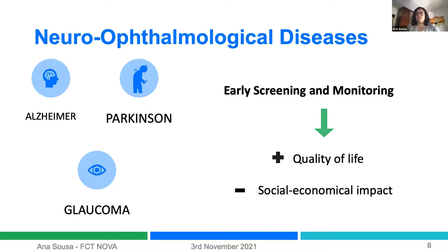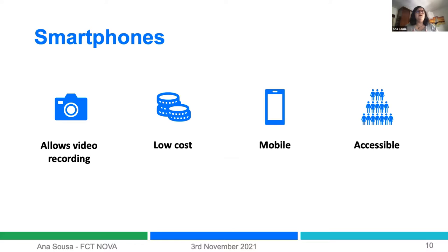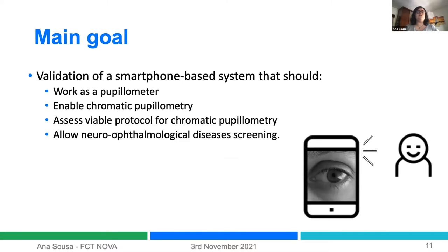If we could early screen and monitor diseases like these, we can increase quality of life and decrease their socioeconomic impact. However, existing pupillometers typically use infrared cameras — they are expensive and not portable, and the more portable ones are also very expensive. It's difficult to bring this technique to a recording system that could be spread worldwide. But we have technology that could overcome this: smartphones. Smartphones allow video recording, are low cost, mobile, and accessible everywhere.